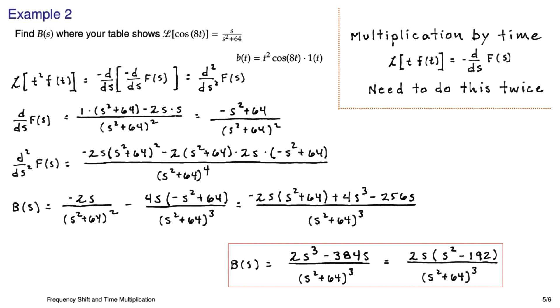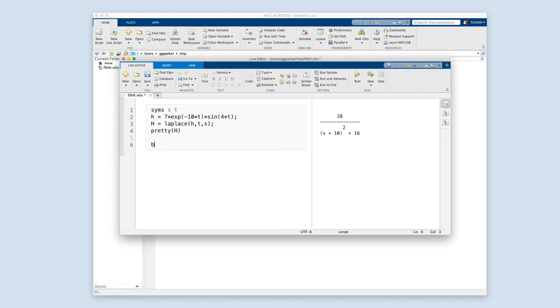So let's have a look at this in MATLAB. So here we have B, and that was t-squared cosine 8t. And we'll just take the Laplace transform of that. Help if I did B. And we'll pretty it up a little bit. And there we go.